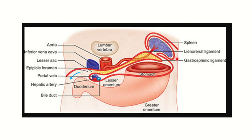In another picture, the anterior part contains the portal vein, hepatic artery, and bile duct. Posteriorly is the inferior vena cava, and inferiorly is the duodenum. This clearly shows all four boundaries of the epiploic foramen in one view.